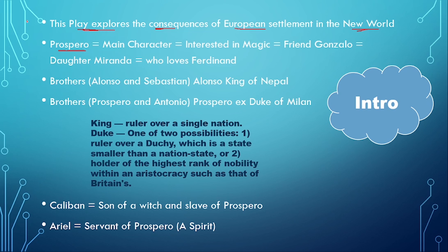The main character is Prospero, who was very interested in magic. You must remember this. His friend was Gonzalo — I told you, this was a loyal person. Gonzalo was Prospero's friend.